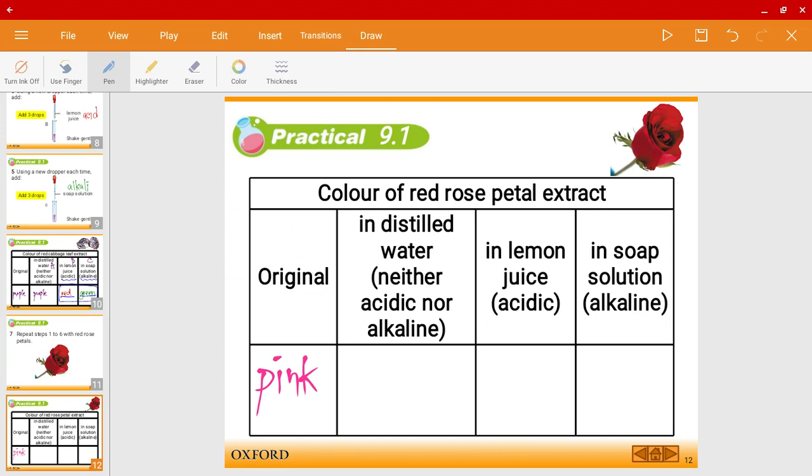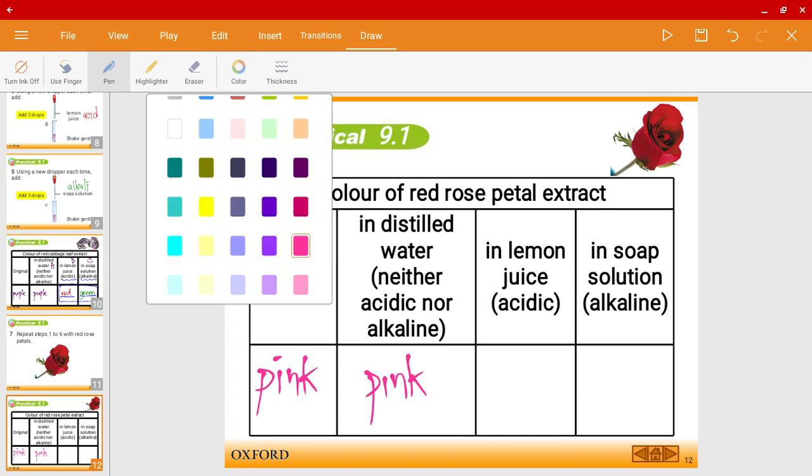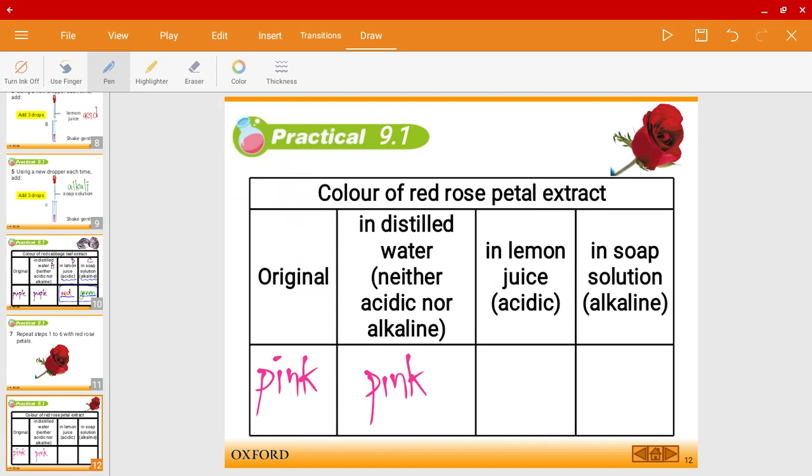In distilled water, what should the color be? Yes, it should be pink because it's neither acidic nor alkaline. How about in lemon juice? In lemon juice, in acid, it is, again, it is red for this one.